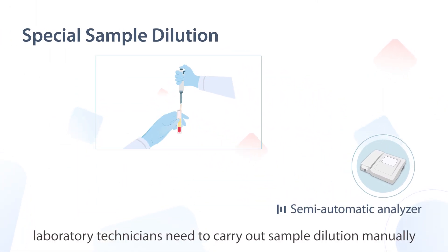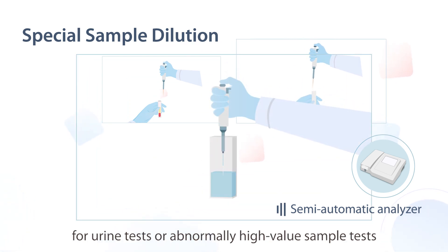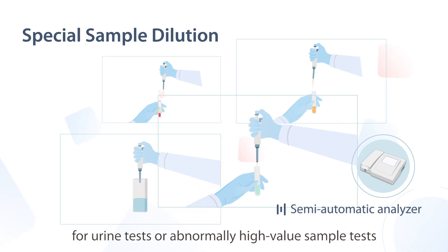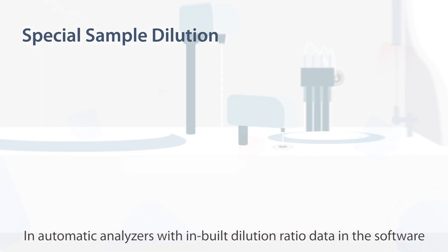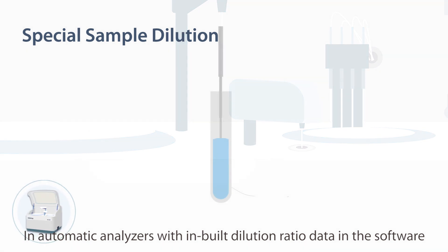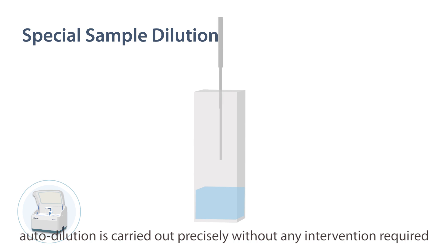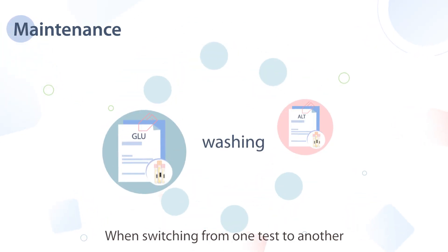With semi-automatic analyzers, laboratory technicians need to carry out sample dilution manually for urine tests or abnormally high-value sample tests. In automatic analyzers, with inbuilt dilution ratio data in the software, autodilution is carried out precisely without any intervention required.